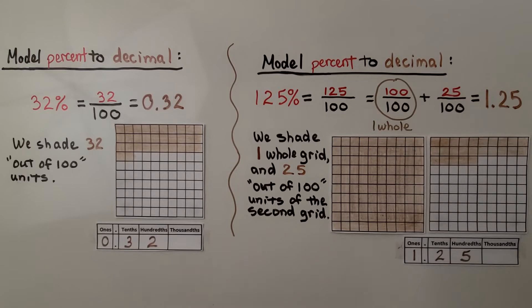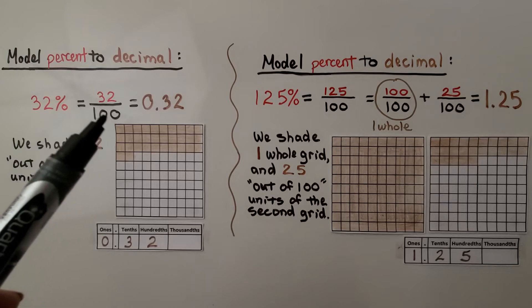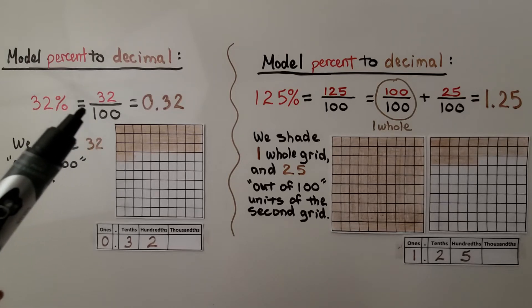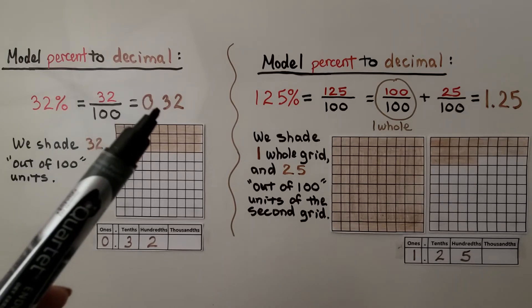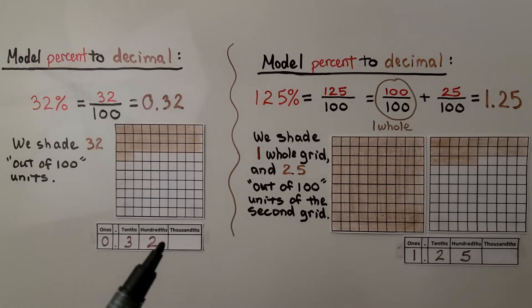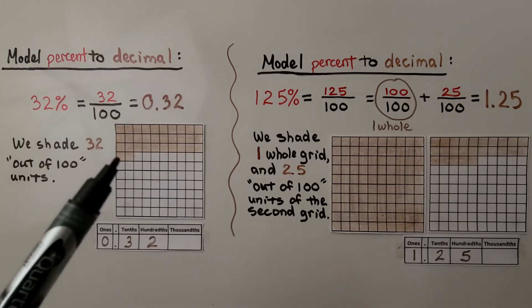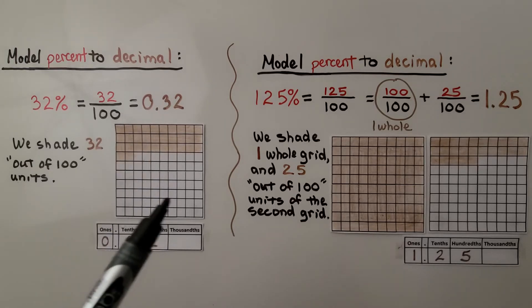To model a percent to decimal, we have 32% which is 32 out of 100. It's 32 hundredths as 0.32 because that's the hundredths place. We shade 32 out of the 100 units.